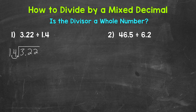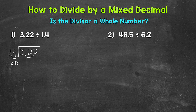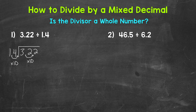Whatever we do to the outside — the divisor — we must do to the inside — the dividend. So let's move this decimal once to the right as well. Technically, we multiplied both the divisor and dividend by 10 to shift the digits one place to the left, giving us a whole divisor. Making the divisor whole places the decimal for us in our answer, and since our divisor is now whole, we can go through our division process — the same process we use with whole numbers.